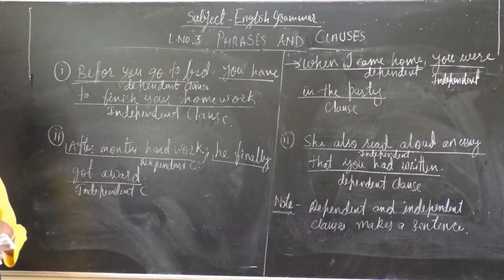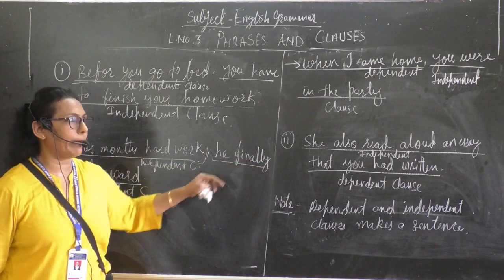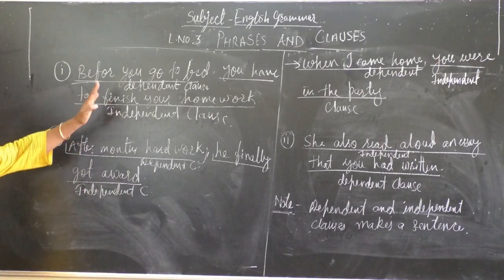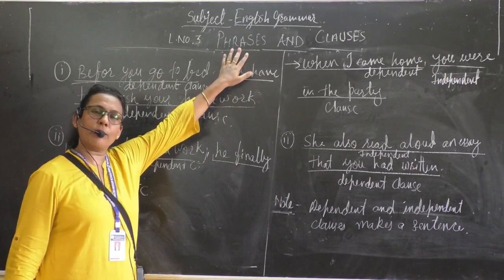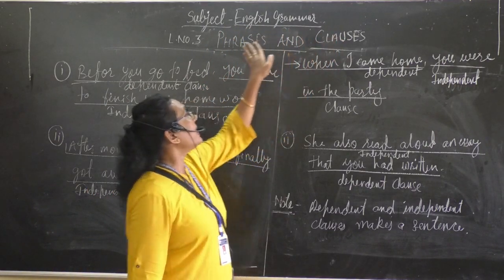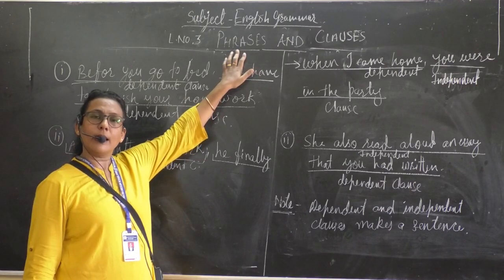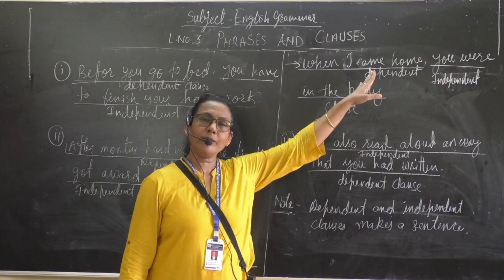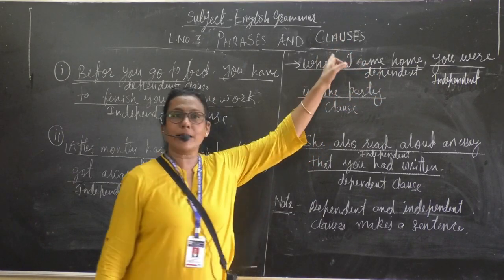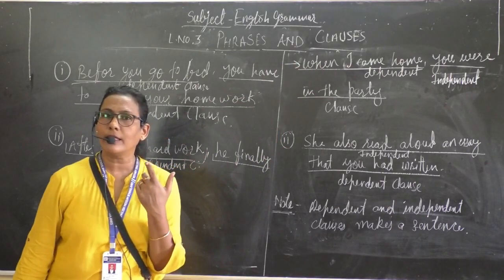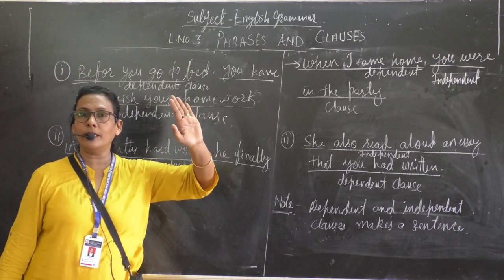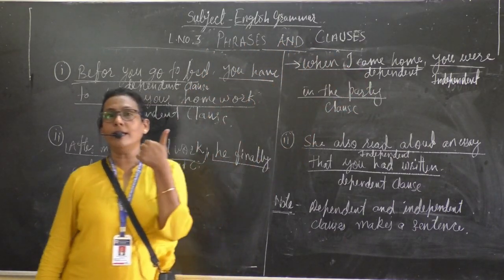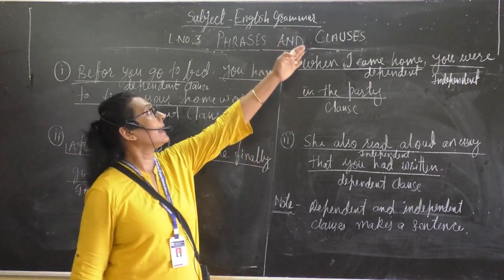So, children, I hope you got all these examples clearly. I hope you understood this lesson. What we have learnt in this lesson: we have learnt phrases and clauses. A phrase is a group of words making some sense but not a complete meaning — no subject, no verb. A clause has a subject and a verb, and a clause with complete meaning is an independent clause.